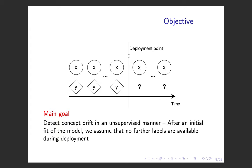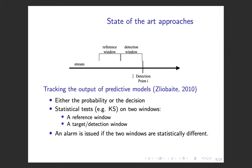We assume that after fitting our predictive model and deploying it, no further labels are available. There are some approaches to solve this problem mostly based on tracking the output of predictive models. Instead of monitoring the performance of the model, we monitor its output. For example, at some detection point, we have a target window right before it and a reference window before that. If these two windows of data are statistically different, we issue an alarm regarding some change. This is one of the most common approaches to deal with this problem.